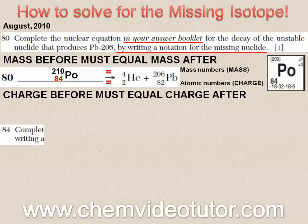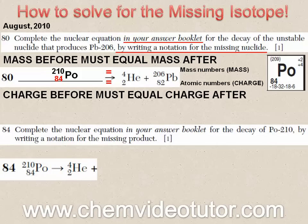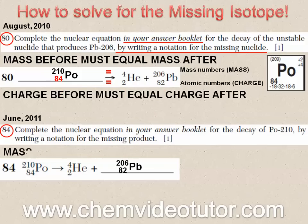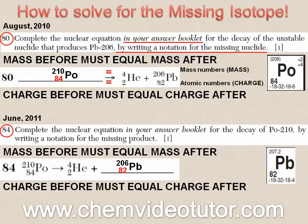Now the Chemistry Regents has a tendency to use the same questions over and over again, sometimes word for word, and often times right around the same question numbers, like this one from the June 2011 Chemistry Regents exam. Considering they used the same exact example, can you guess what the answer will be? That's because the mass before must equal the mass after, and the charge before must equal the charge after, with 82 being the atomic number for Pb, which is lead.